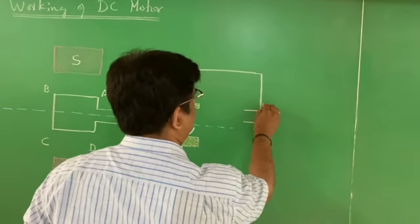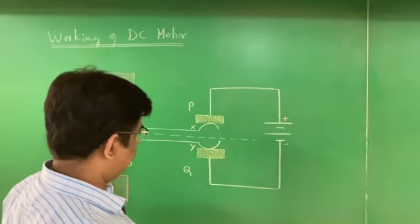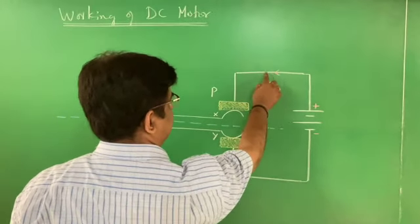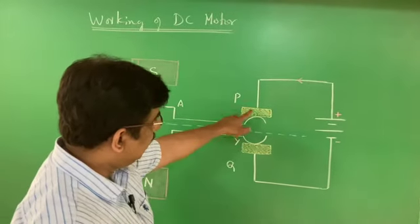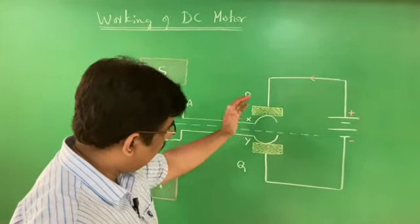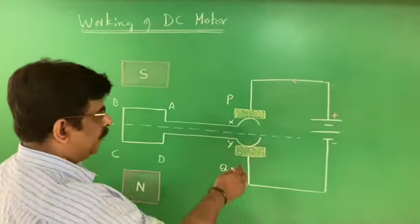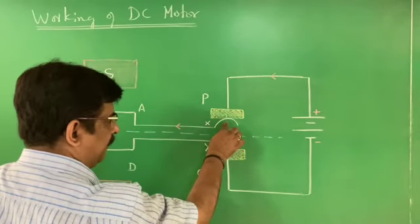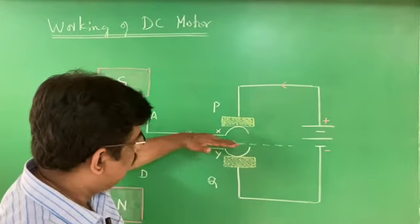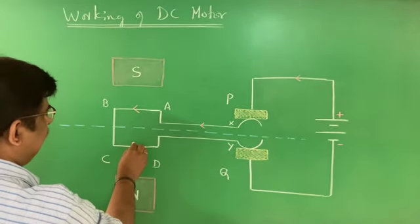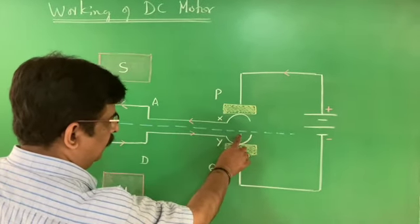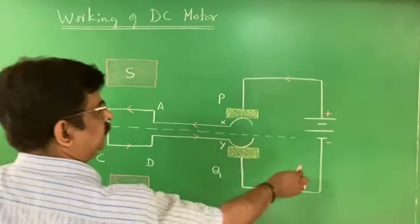Now we are going to understand the working of a DC motor by following the path of the current. Current comes from the positive terminal, goes to carbon brush P, then to copper split ring X. From X it travels to A, then B, C, D through the coil, and comes to copper split ring Y, then to carbon brush Q, and finally goes to the negative terminal. This is the path of the current.